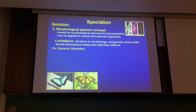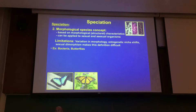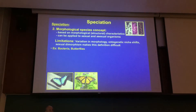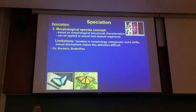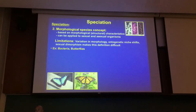The nice part about the morphological species concept is you can apply it to both sexually and asexually reproducing organisms. But it has tons of limitations. First, there's a radical degree of variation within a species in terms of morphology — there are lots of differences.